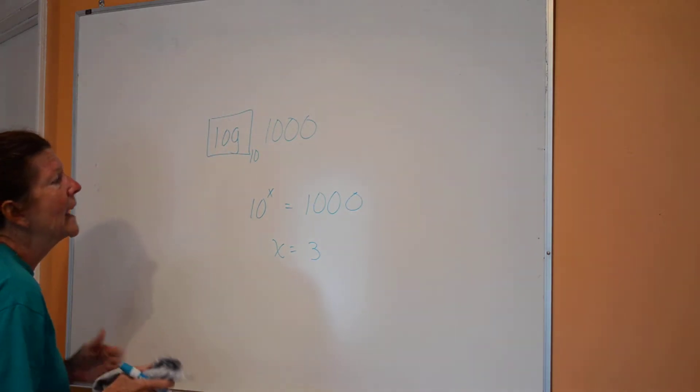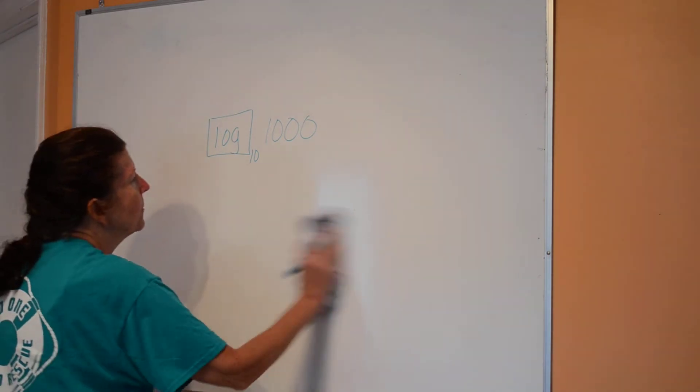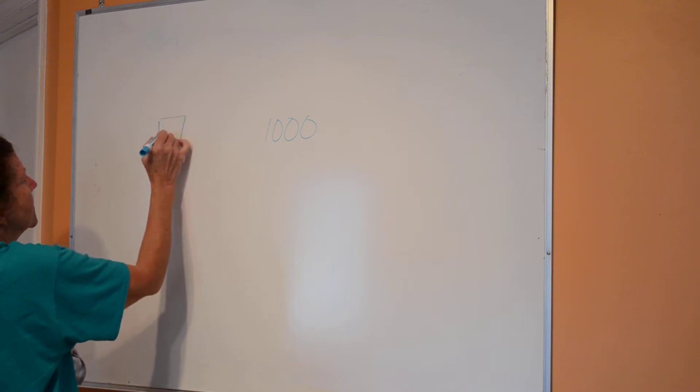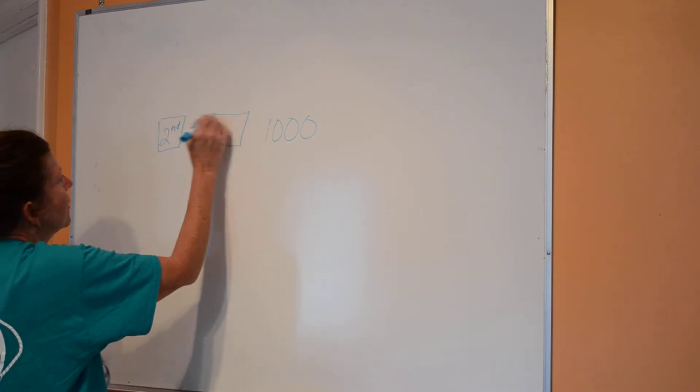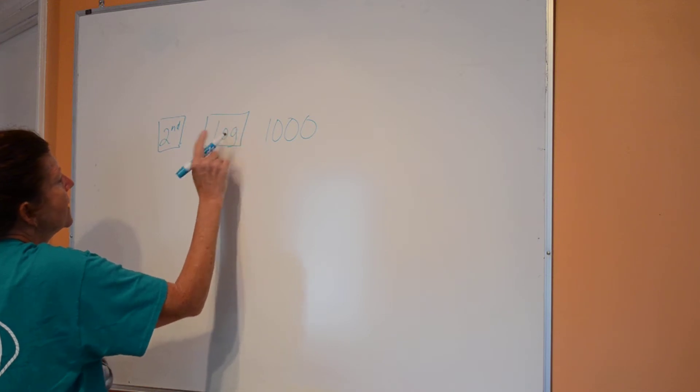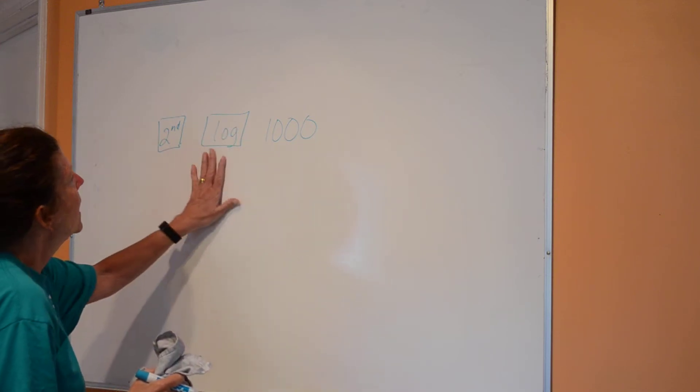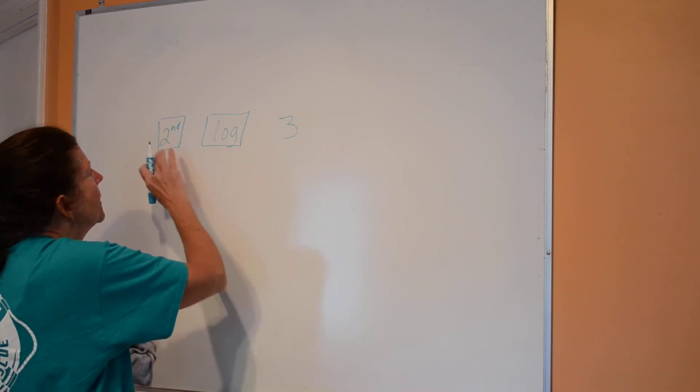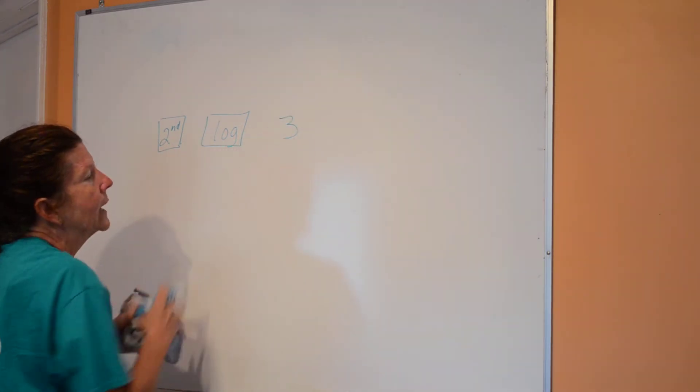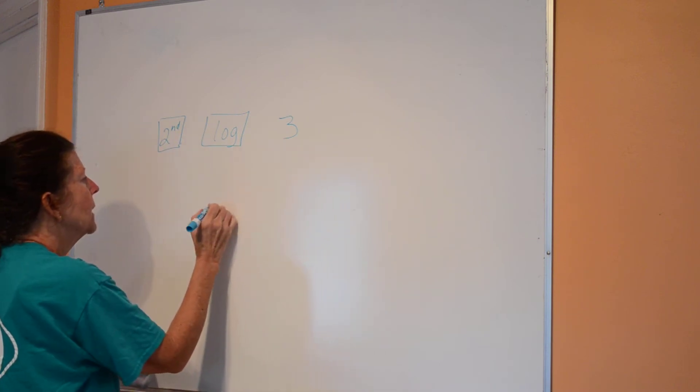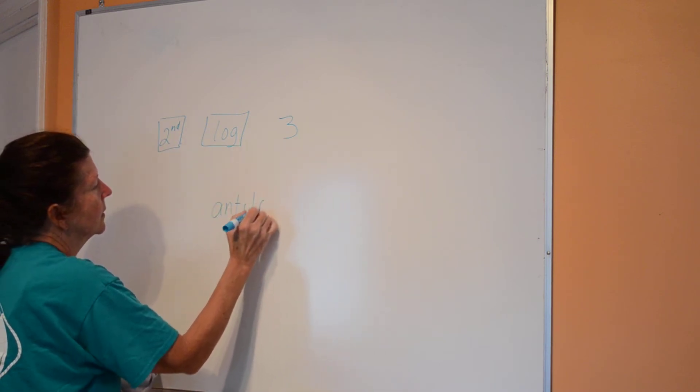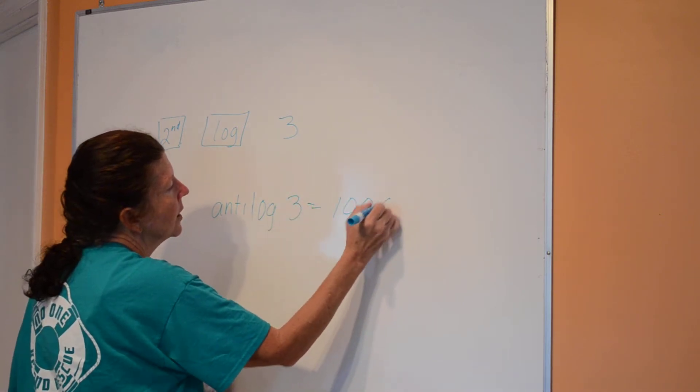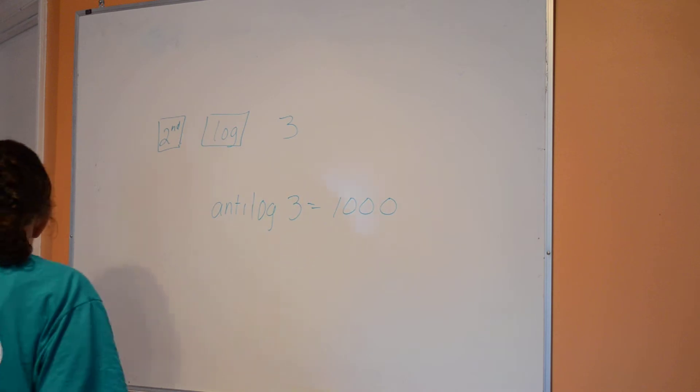This is called a common log. You also learned about an anti-log, which is the second on your calculator and then the log button. And basically if I said the second log of 3 or the anti-log of 3, it's going to give you an answer of a thousand. It's like the reverse or inverse of the log.